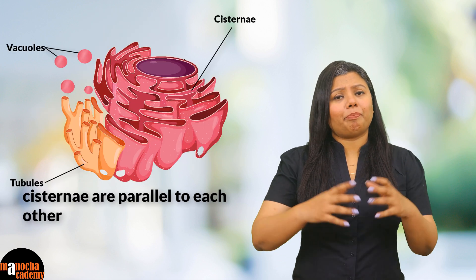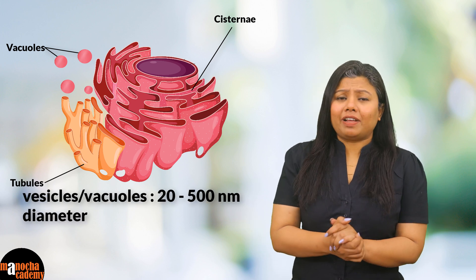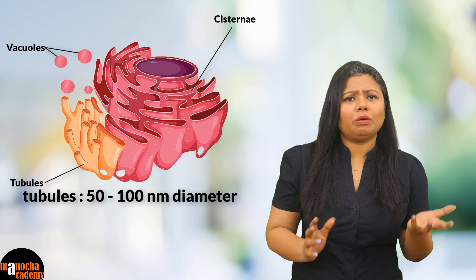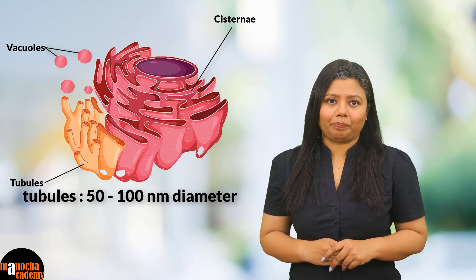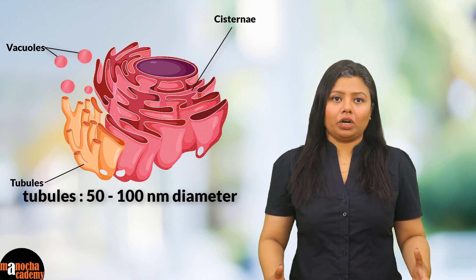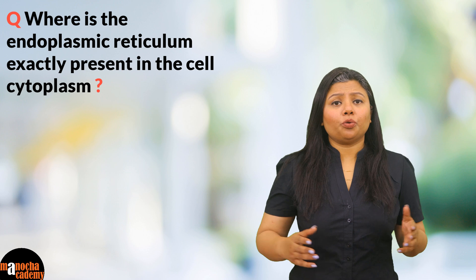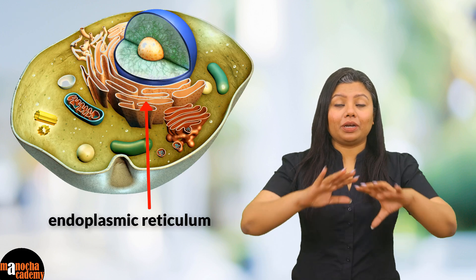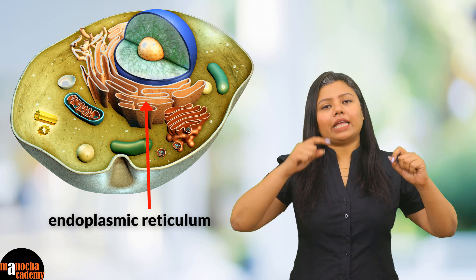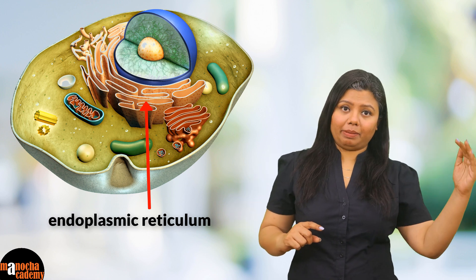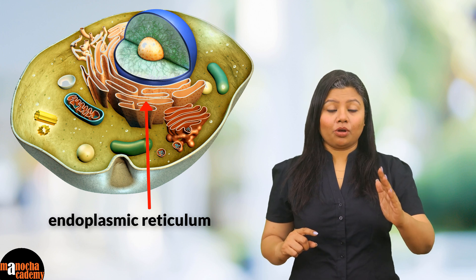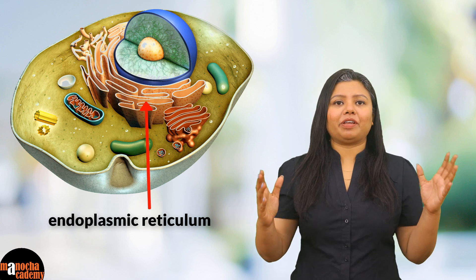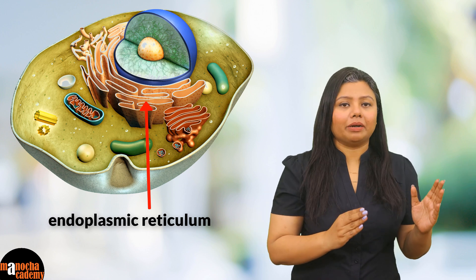The cisternae are arranged parallel to each other in most cases. The vesicles range from about 20 to 500 nanometers in diameter, whereas the tubules are about 50 to 100 nanometers in diameter. All these structures together form the endoplasmic reticulum, which remains scattered throughout the cytoplasm. It may be attached to the cell membrane, the nuclear membrane, or it may span from the cell membrane all the way to the nuclear membrane.